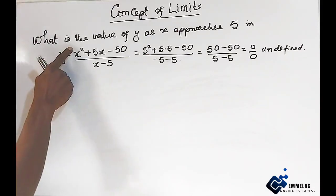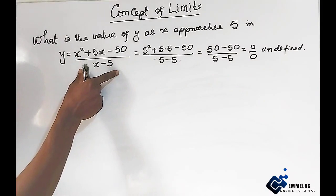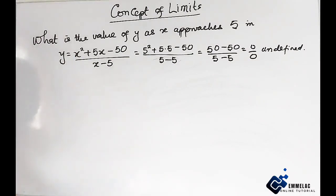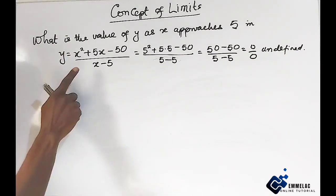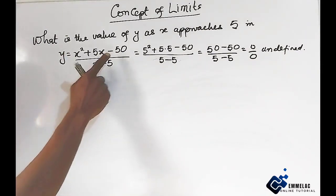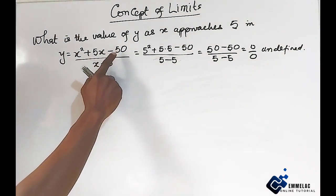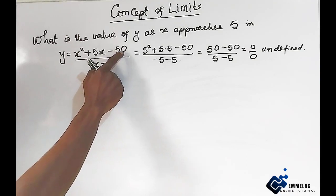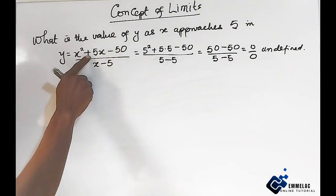Let us now simplify this equation — that is the right-hand side — to the simplest form. We have to factorize the numerator. We will look for two factors that multiply to give negative 50 and when we add those two factors it will give us 5.